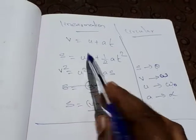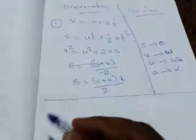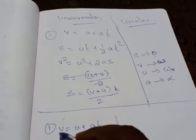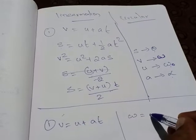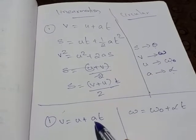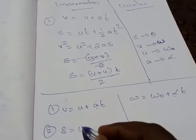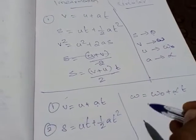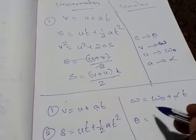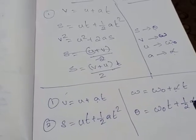Using these substitutions, we write the kinematic equations for circular motion. The first equation: v = u + at becomes ω = ω₀ + αt. The second equation: s = ut + ½at² becomes θ = ω₀t + ½αt².